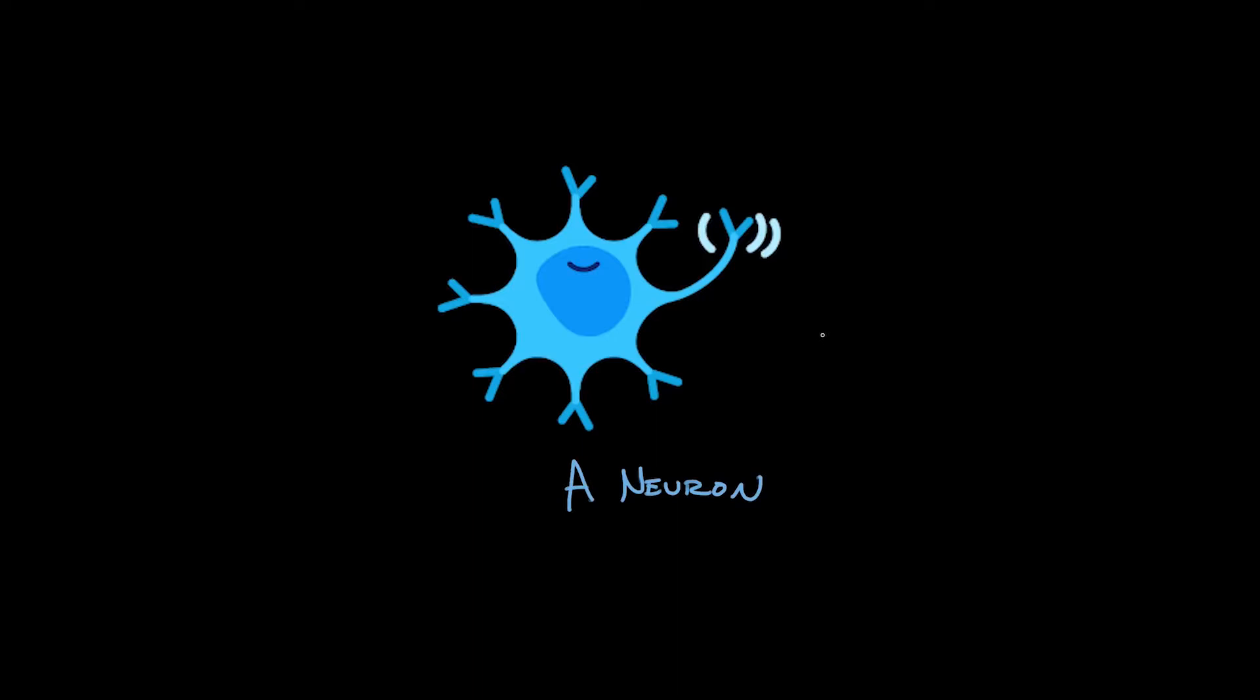A neuron is a brain cell. There's over 100 billion of these things making up your brain. Put it this way, there are over 13 times more neurons in your skull than there are human beings on Earth. A lot of them. They're the cells that help you think.